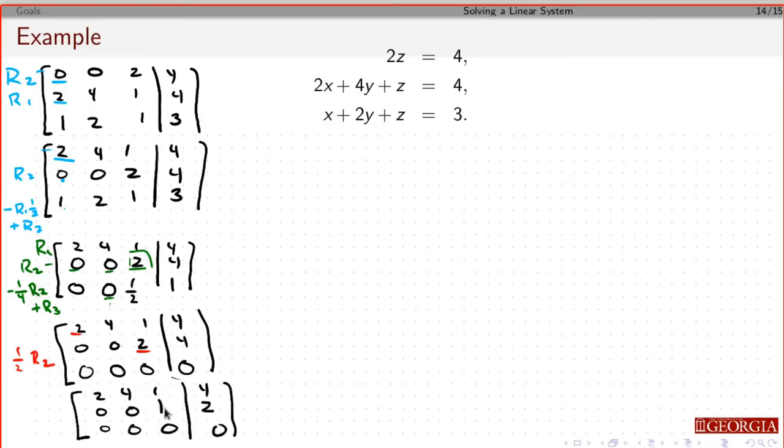And now, again, this is my pivot. I'm going to get a 0 there. So I'm going to do what? I'm going to take my row 1, and I'm going to basically just subtract row 2. So let's see. So I'm going to leave the bottom row alone.